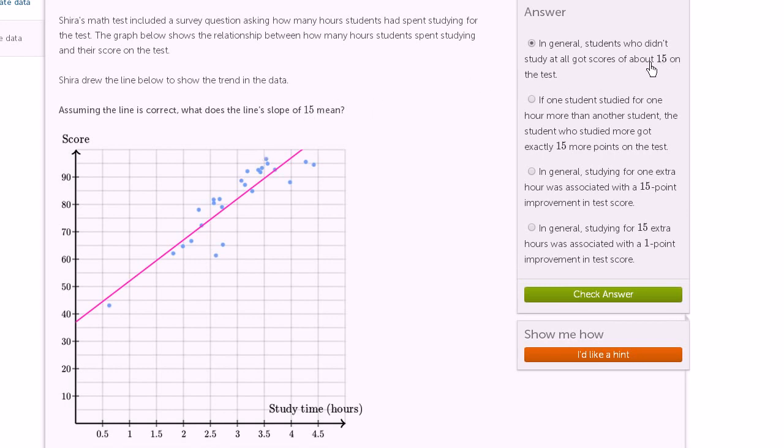Let's try this one. If one student studied for one hour more than another student, the student who studied more got exactly 15 more points on the test. Well, this is getting closer to the spirit of what the slope means.